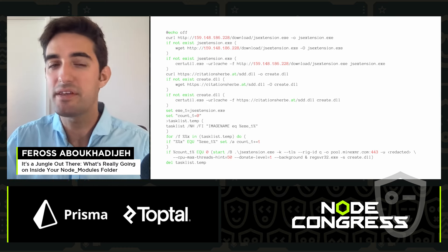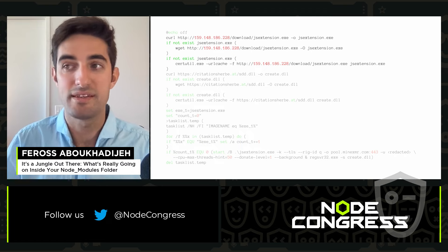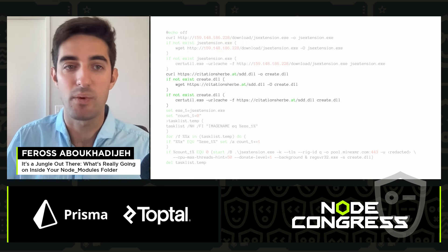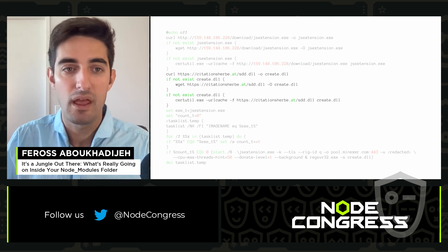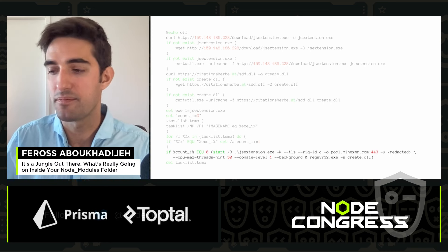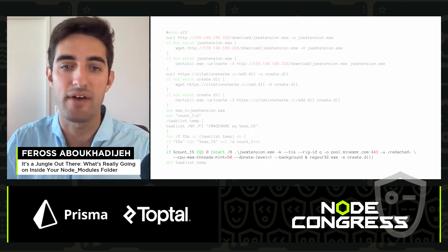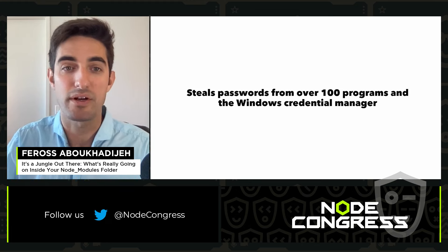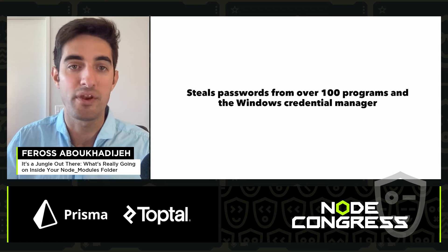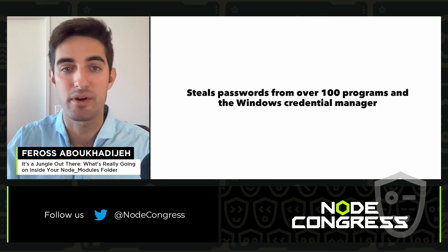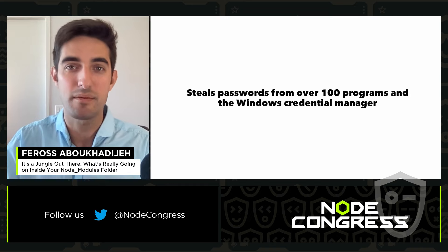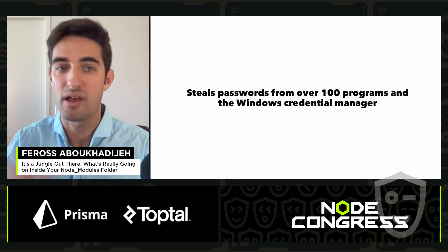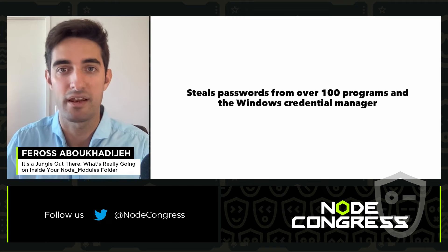On Windows, the script is very similar — it downloads the same Monero miner but also downloads a DLL file and runs that. The DLL file steals passwords from over 100 different programs on the Windows machine, as well as all the passwords in the Windows credential manager. This is a really nasty piece of malware and anyone unlucky enough to run this lost all their passwords and had to do a complete reset of their online accounts.